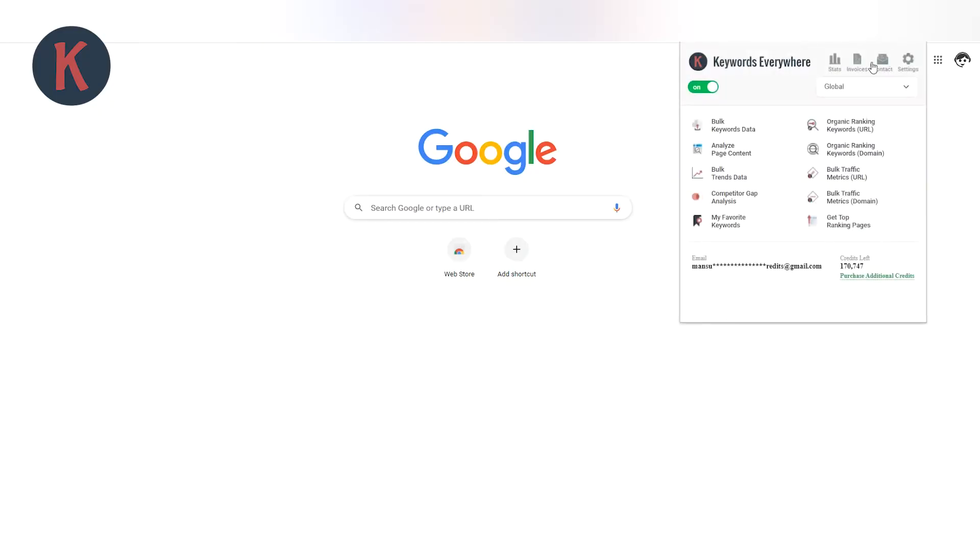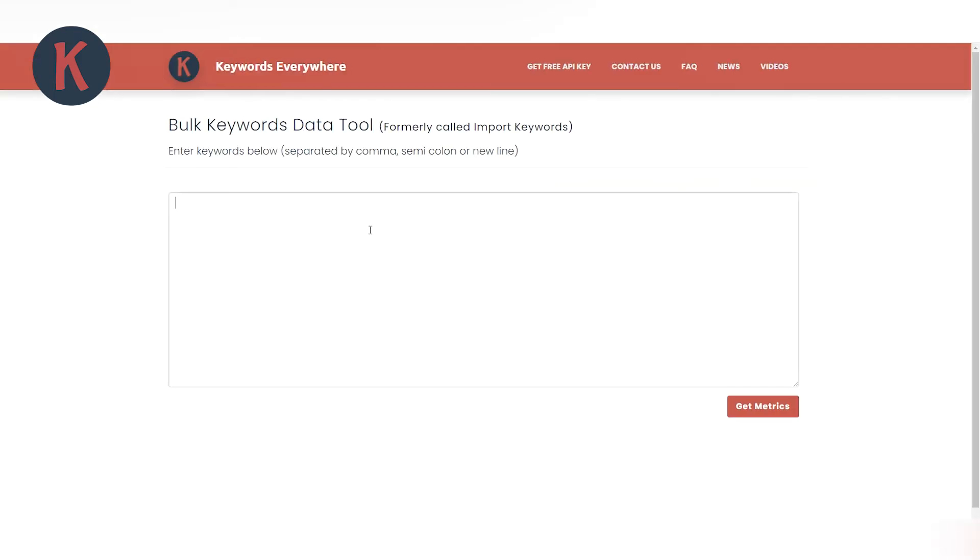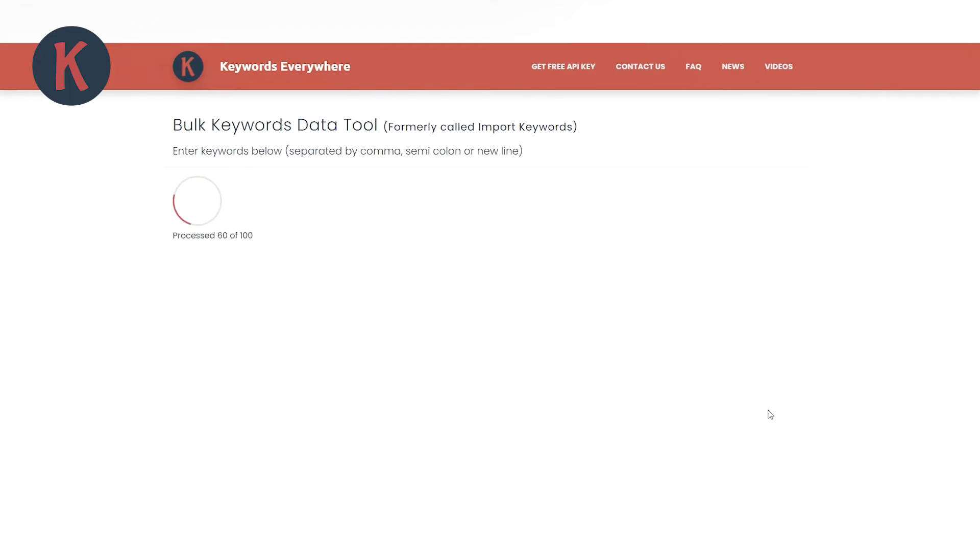When you click this link in the pop-up menu, a new page will open where you can paste the keywords directly. You can enter 10,000 keywords at a single time and you can do this as many times as you want.